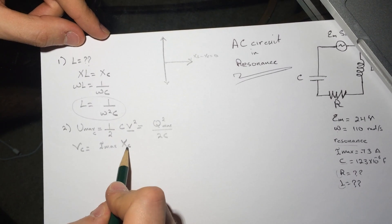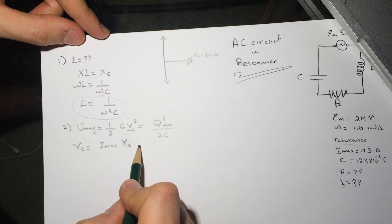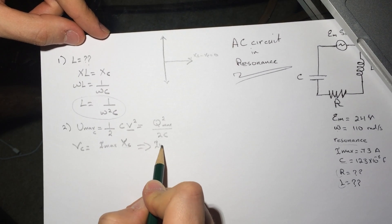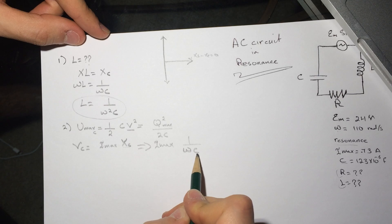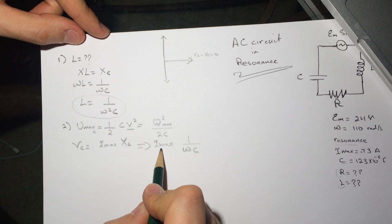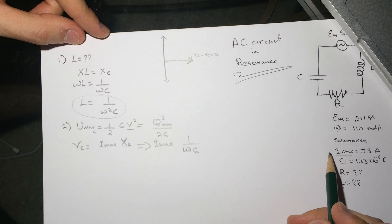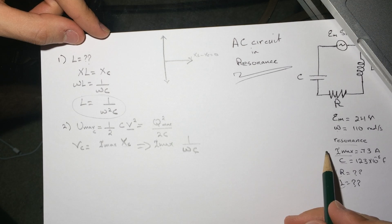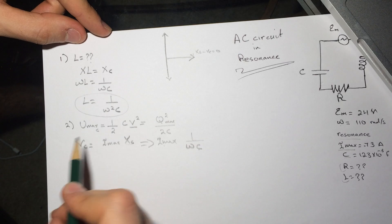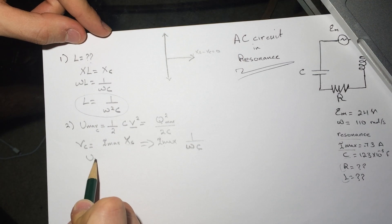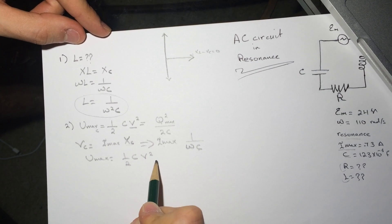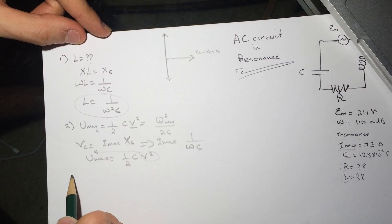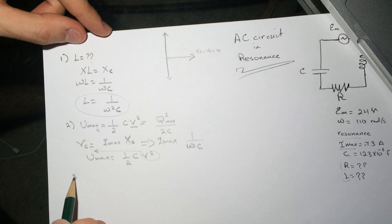XC will be 1 over omega C. We have omega, we have C, and we have Imax, so we can find the voltage across the capacitor. So Umax will be equal to half C V squared, where this V is the one you're going to find here.